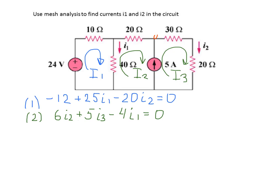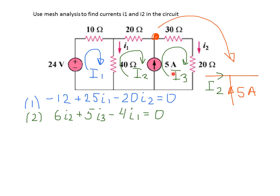To get the third equation, we look at the upper node where the 5A current source connects. The 5A current enters the node, the mesh current I2 also enters the node, and the mesh current I3 leaves the node. Applying Kirchhoff's current law — the sum of currents entering equals the sum of currents leaving — we get: I2 + 5 = I3. This is our third equation.